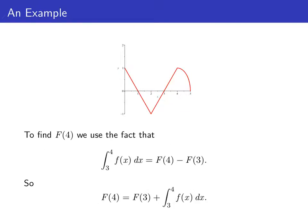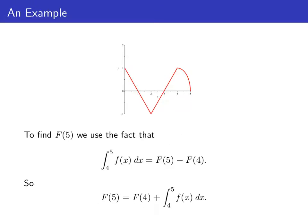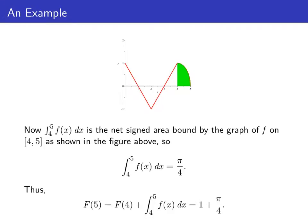Similarly, big F of 4 can be found by integrating little f of x from 3 to 4. That integral equals big F of 4 minus big F of 3. Using the net signed area interpretation, the integral from 3 to 4 is the area of that green triangle, which is one half. So big F of 4 equals big F of 3, which is one half, plus one half — giving us 1. For big F of 5, the integral from 4 to 5 corresponds to a quarter circle of radius 1, so it equals pi over 4. Therefore big F of 5 is 1 plus pi over 4.